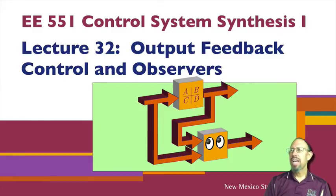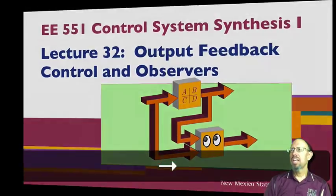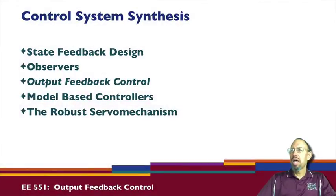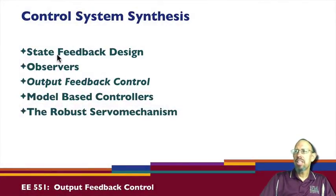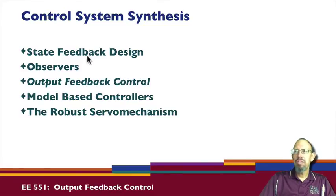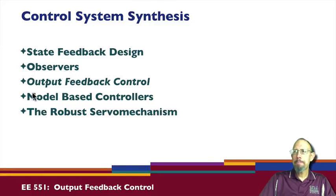In this lecture we're talking about output feedback control and observers. We've talked about observers already and looked at state feedback design, including how we could use something like Ackermann's formula or place command to do state feedback and place poles where we want. We've seen that we can also create an observer for a system, involving getting an observer gain, so that if we have a stable observer, the estimate of the state can converge to the actual state.